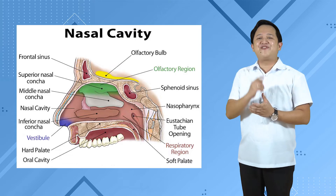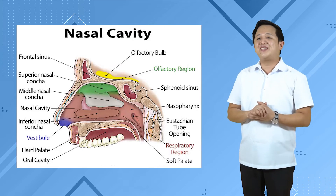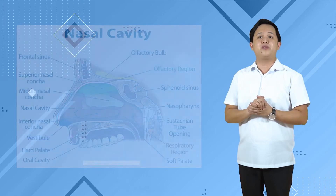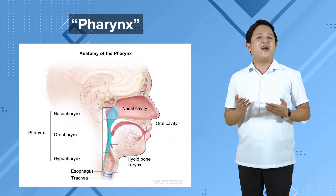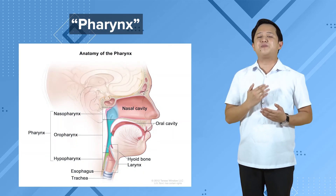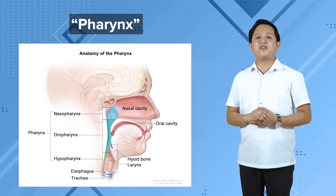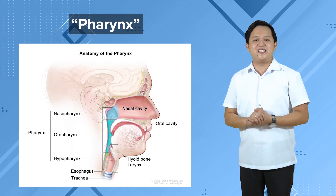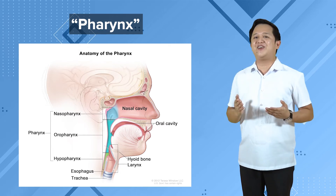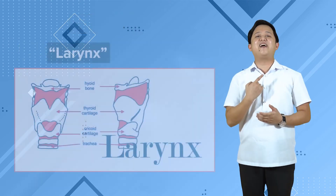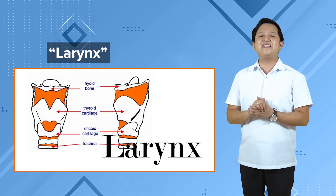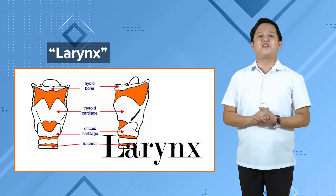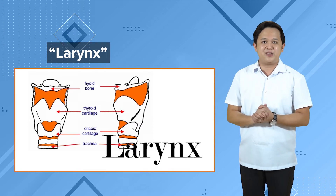Upon entering from the nose, filtered air passes through the upper throat called the pharynx — the narrow space located right after the mouth and nose. The part related to respiration is called the nasopharynx. The larynx, or voice box, connects the pharynx and the trachea, and contains vocal cords that produce sound when vibrated by air.